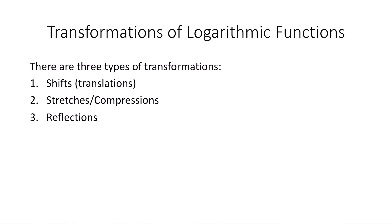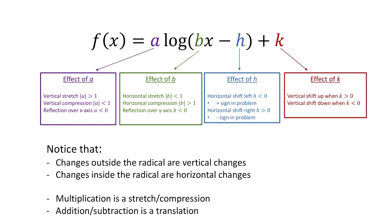When we talk about transformations, we're talking about three types: shifts, which are translations left or right or up or down; stretches and compressions; and reflections. Looking at the function f of x equals a log of bx minus h plus k, we can describe the transformations. Any number on the outside of the log is a vertical transformation. Any number on the inside is a horizontal transformation. If we are multiplying a number, it's a stretch or compression. If we're multiplying a number less than one, that's a reflection. Addition or subtraction is a translation.